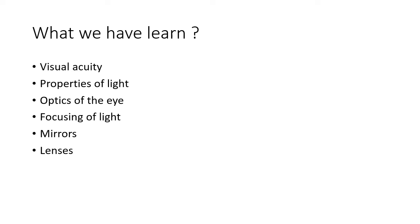Up till now we have known how light is focused. Many times I have told you that if the light is focused on the light-sensitive layer of the retina, we call it an emmetropic eye — the patient will have 6/6 vision. If the light is focused in front of the retina, we call it myopia; if behind the retina, we call it hypermetropia. You have to correct this refractive error, which is done by a neutralization method called retinoscopy. Today we will learn about refraction and retinoscopy.